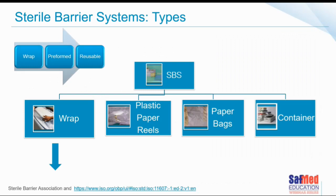Sterile barrier system types are referred to as wrap, preformed, and reusable. In the CSSD setting, generally we are going to see wrap, plastic-paper reels mostly, and in some departments plastic-paper pouches. We will also see paper bags and containers.